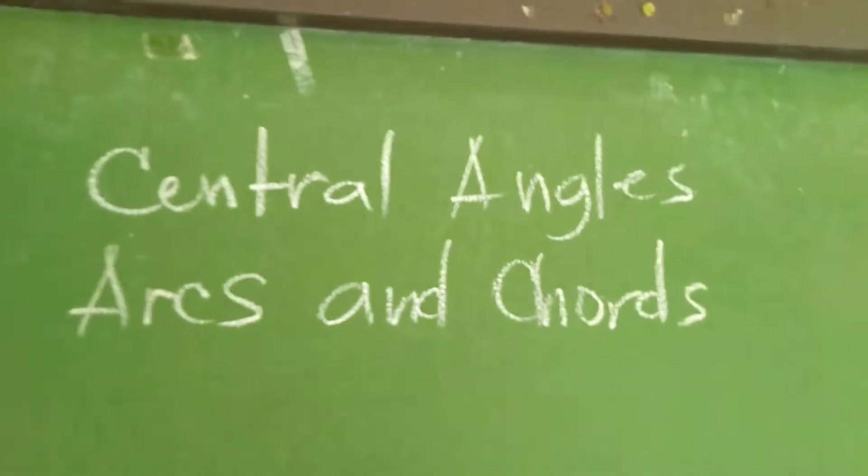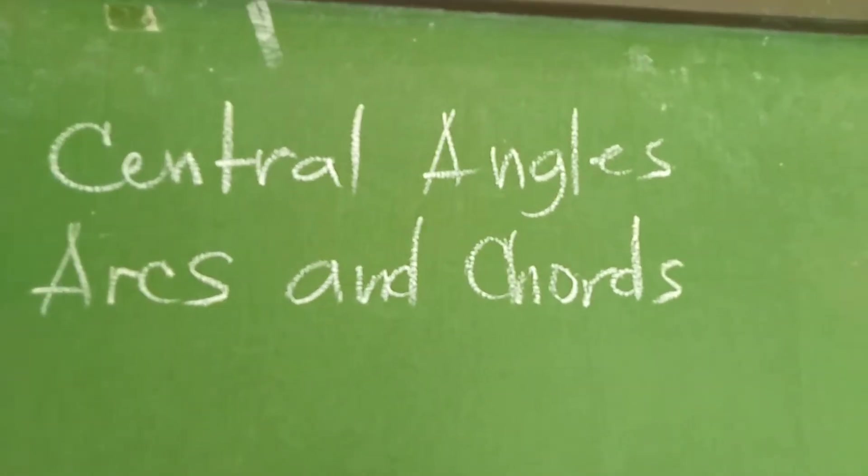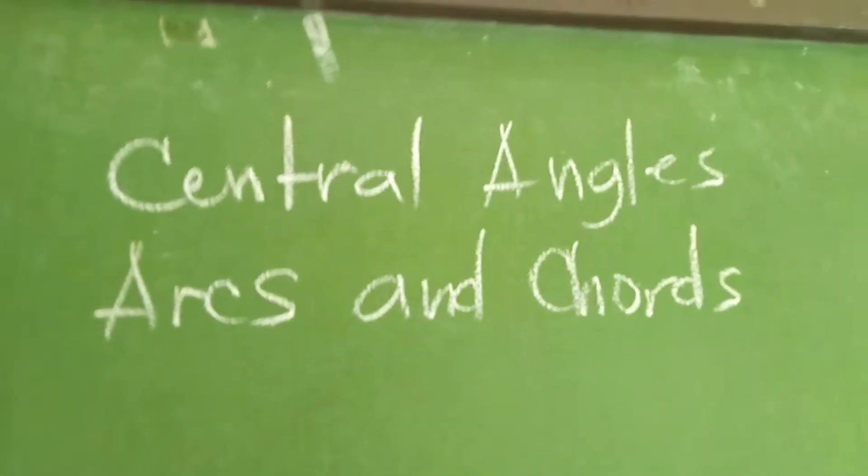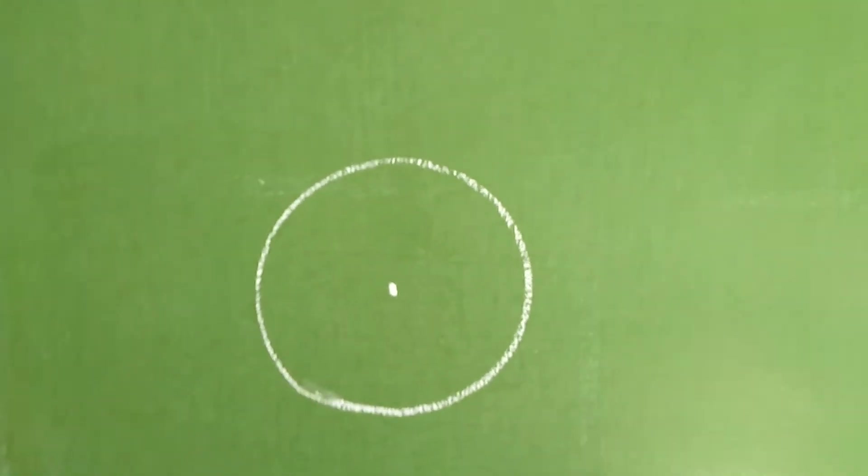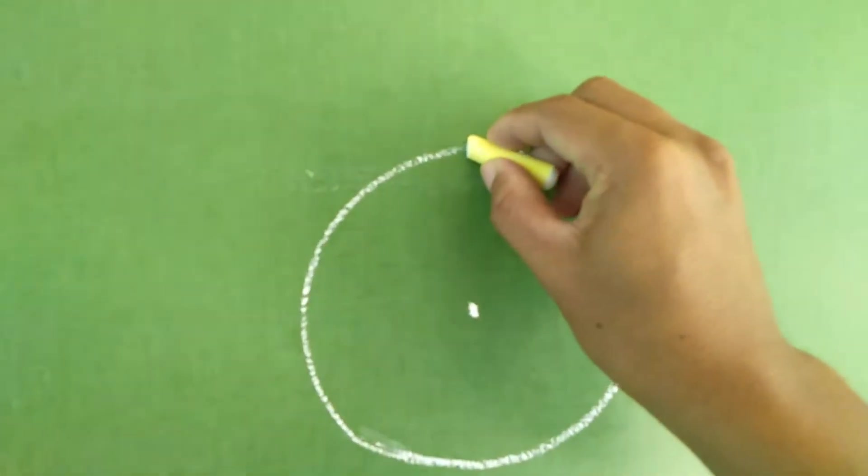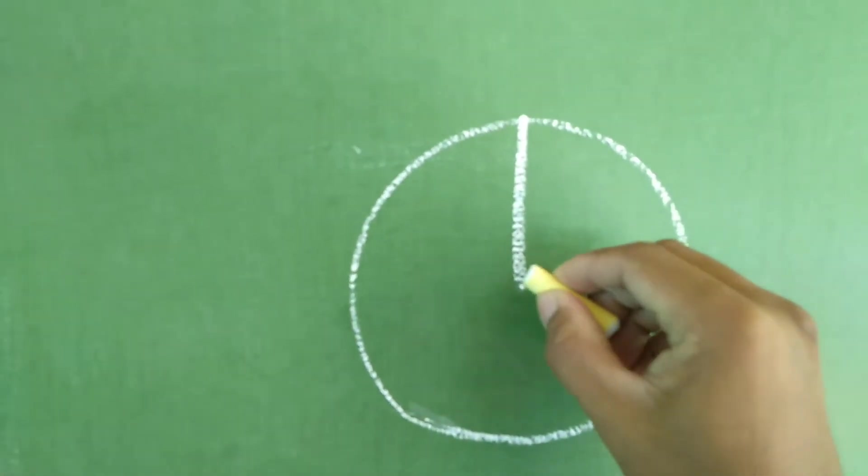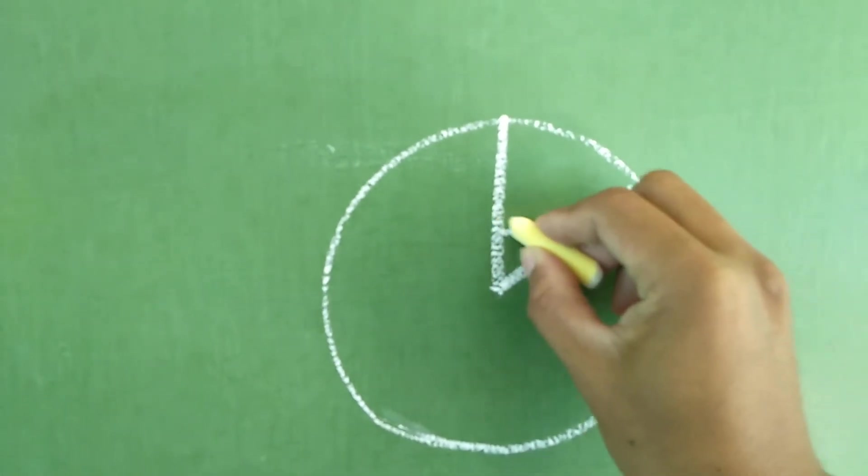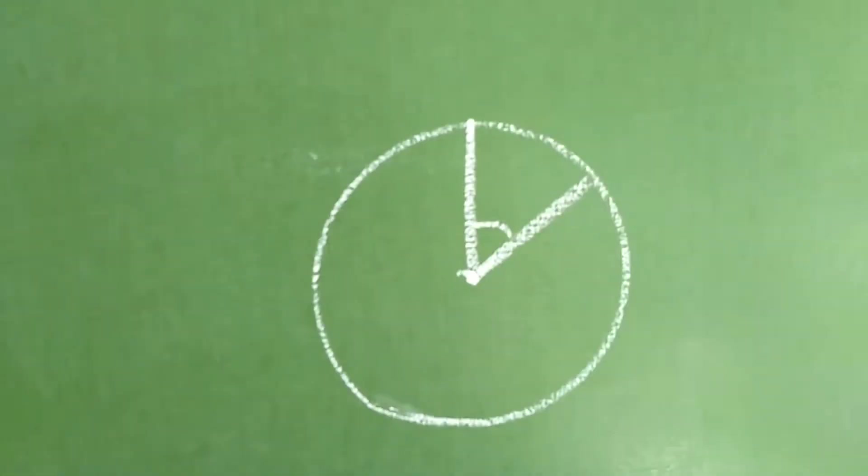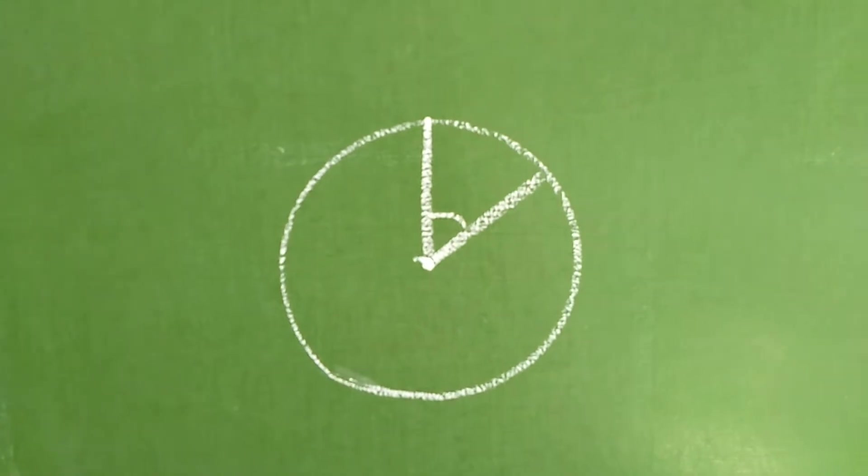First, Central Angle. Ano ba yung Central Angle na tinatawag natin? Okay, given this circle, nagprepare na ako ng maraming circle kasi mahirap pong mag-drawing ng perfect circle. Suppose this is our circle. Ano ba yung Central Angle na tinatawag natin? Okay, yung Central Angle na tinatawag po natin is yung angle na nasa center. Okay, that is what we call as the central angle.